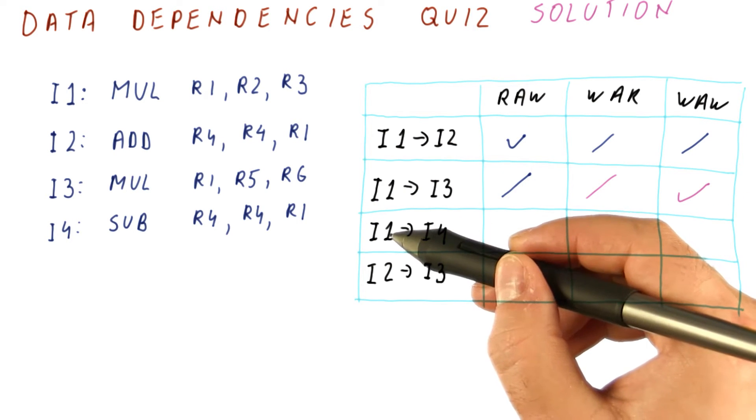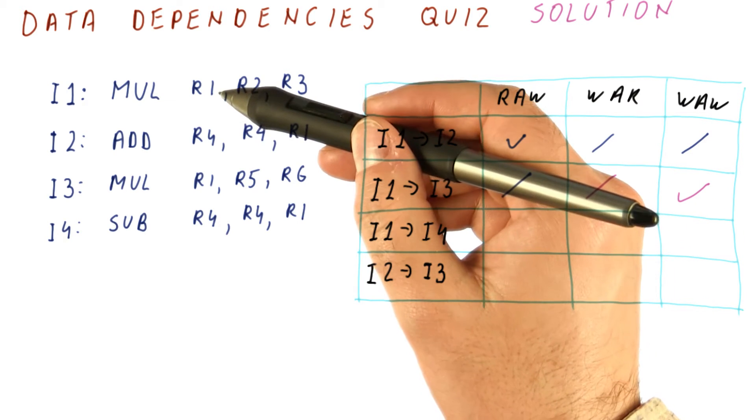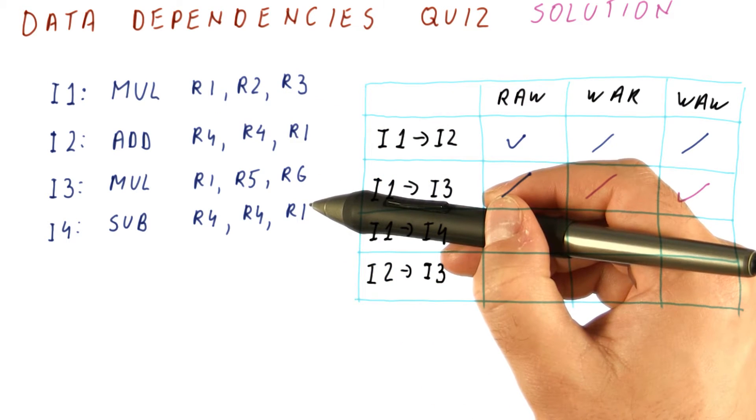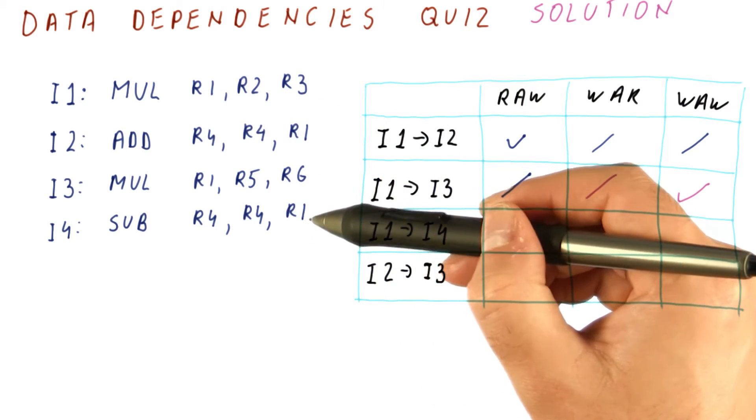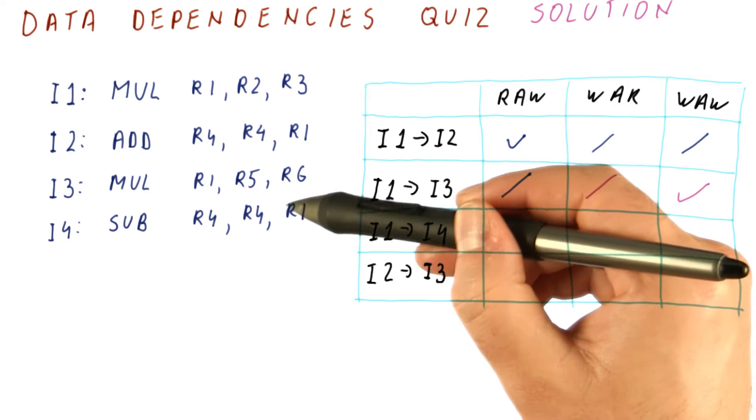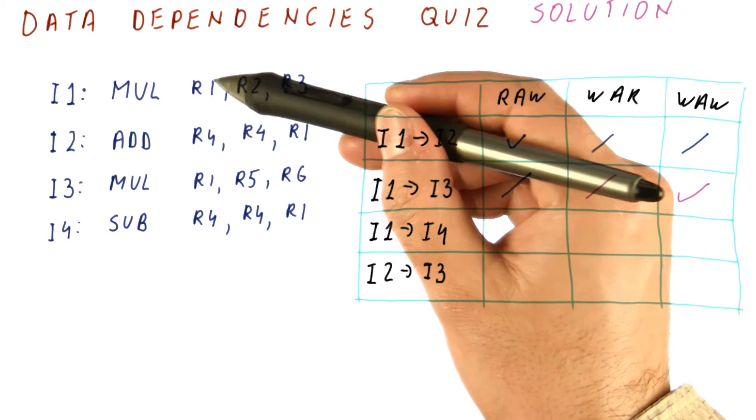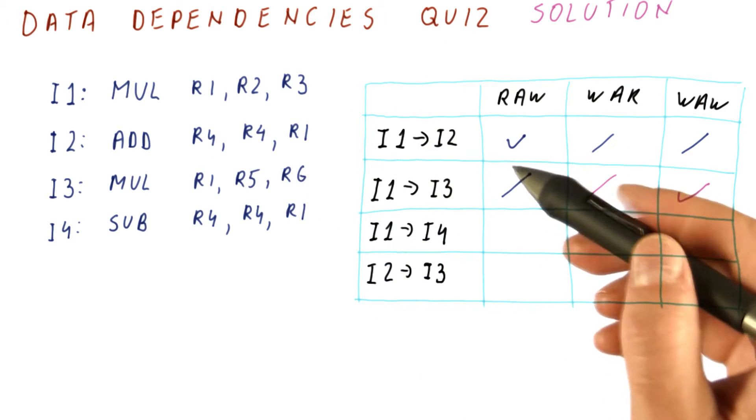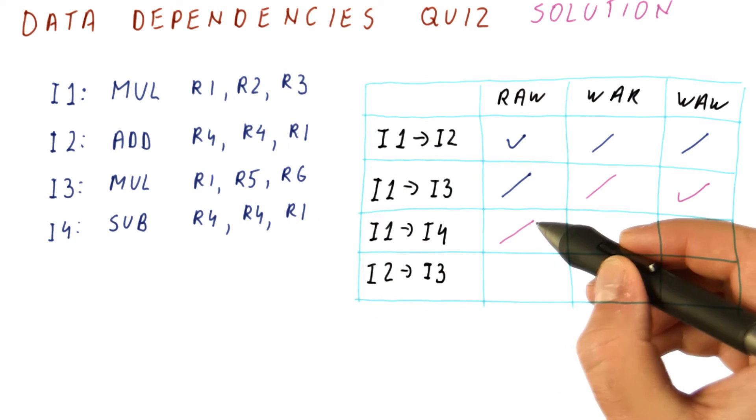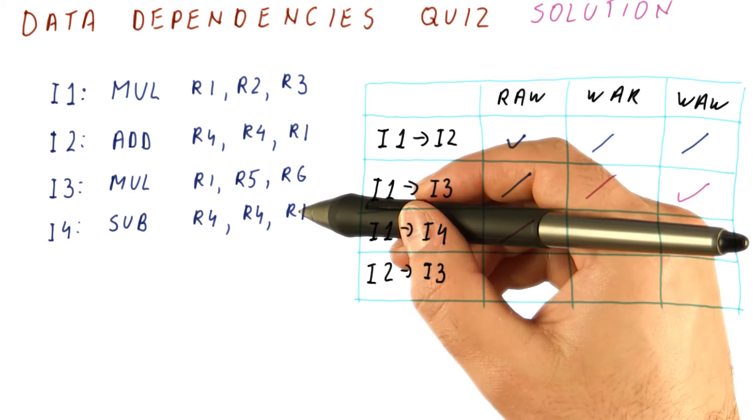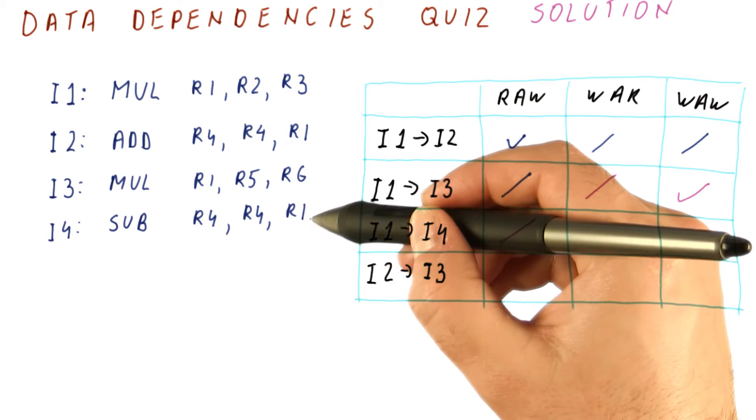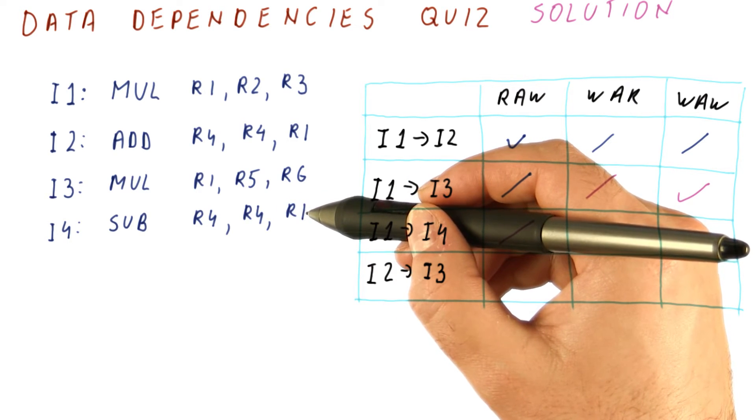Now let's go from I1 to I4. I1 is producing R1, and I4 is reading R1, but the value that I4 is supposed to read here is not the one produced by I1, it is the value produced by I3. So in fact, there is no RAW dependence from I1 to I4. That would occur only if I4 was reading R1 that was produced by I1, which is not happening.